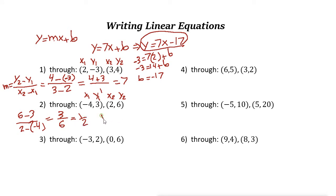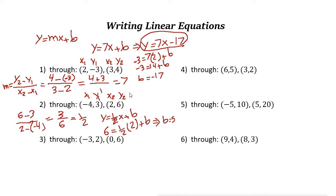We have y equals 1/2 x plus b. Choosing the point where x is 2 and y is 6: 6 equals 1/2 times 2 plus b, which is 1 plus b. So b equals 5. The equation of this line is y equals 1/2 x plus 5.